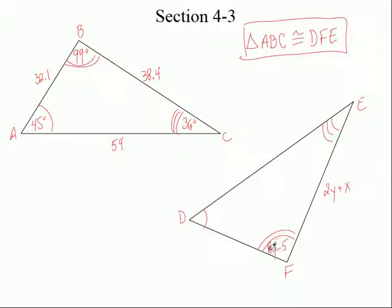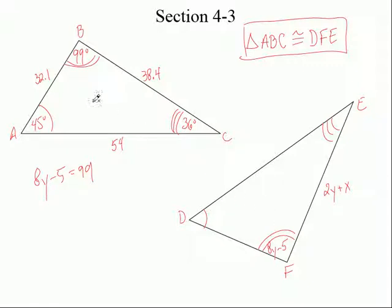So if I'm trying to solve for angle F, which is 8Y minus 5, what do I set it equal to? 99. How did I know that? Because they told me which triangles are congruent, so that angle equals this one. I'm running out of time so I won't do the math — you can solve for Y on your own. Now for side FE: what's equal to FE? BC. FE is opposite the angle with one arc, and BC is opposite the one arc on the other triangle, so 2Y plus X equals 38.4. Solve for Y first, plug it in, then solve for X.